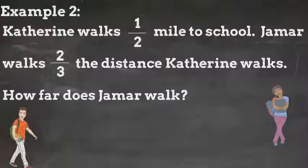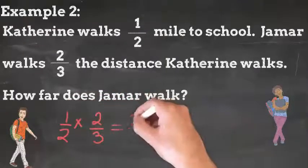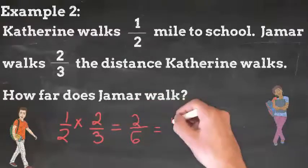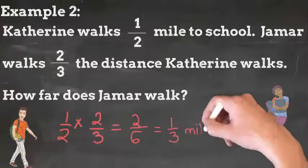Now, when I calculate, I get 2 sixths. That can be simplified by dividing the numerator and denominator by 2, resulting in 1 third of a mile.